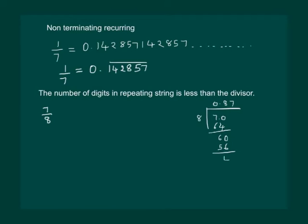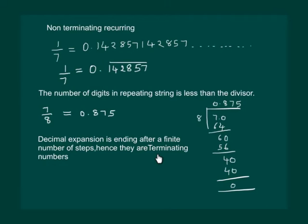Now since the decimal is already there in the quotient, we can put a 0. We get 7s are 56, which gives us 4. Again putting a 0, we get 40, and finally we come to remainder 0. So we can write that 7 by 8 is equal to 0.875, and such numbers are called terminating numbers.